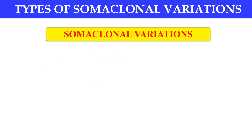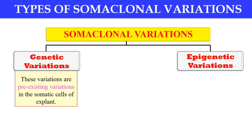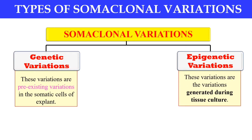The types of somaclonal variations: somaclonal variations are generally of two types — genetic somaclonal variations and epigenetic somaclonal variations. Genetic variations, as the name indicates, are pre-existing variations in the somatic cells, and these may be due to mutations or other DNA changes. While epigenetic somaclonal variations are those variations which are developed during plant tissue culture — they are not pre-existing; they develop during the plant tissue culture process.